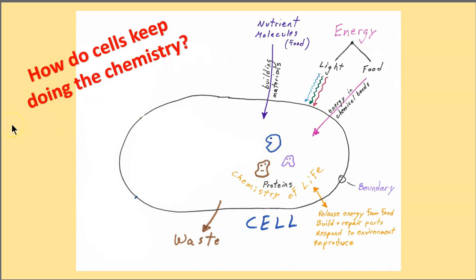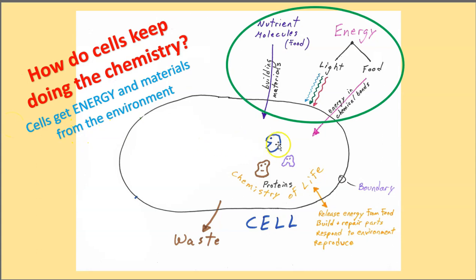So how do cells keep doing the chemistry? Cells get energy and materials from the environment. So for cells, sometimes a molecule might be a source of energy like glucose. Other kinds of cells capture sunlight energy to power the chemistry. Of course, all cells need basic building materials as well to build the molecules that cells are made of.